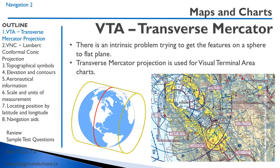Let's discuss a couple of methods for how aviation charts are made. One of the issues is that the earth is round, and we need to project it onto a flat surface — onto a map. It doesn't make much sense to go flying with a globe, so there are a couple of projections that we use.